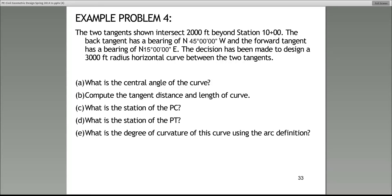Let's do this problem together. The two tangents shown on the next slide intersect 2,000 feet beyond the station 10 plus 00. The back tangent has a bearing of north 45 degrees west, and the forward tangent has a bearing of north 15 degrees east. The decision has been made to design a 3,000 foot radius horizontal curve.